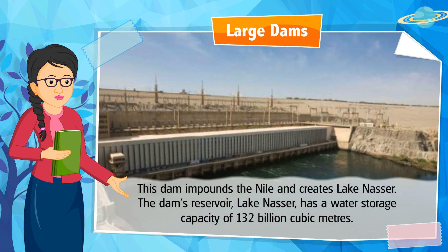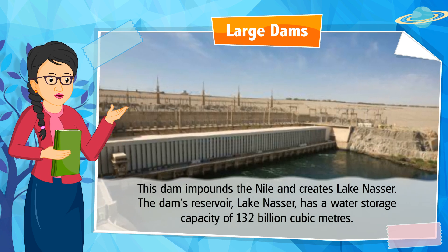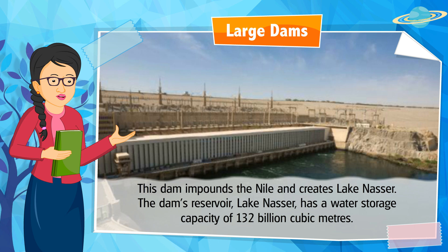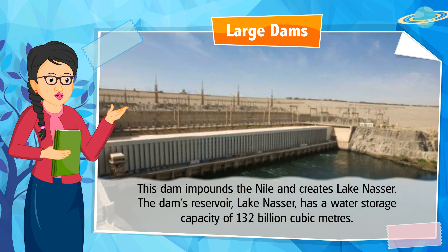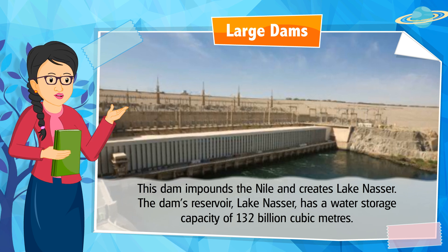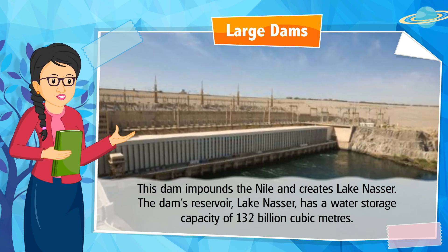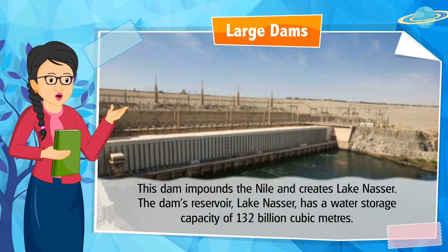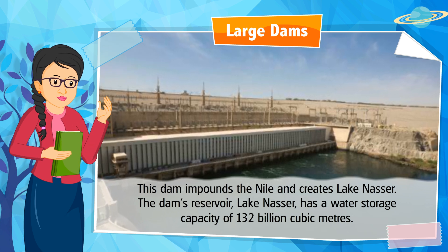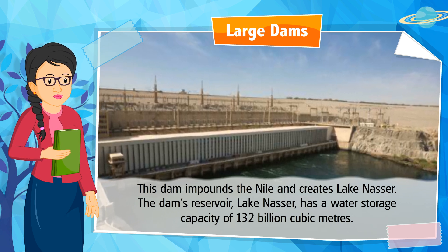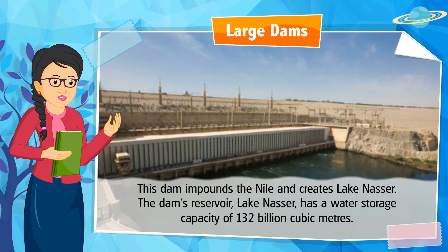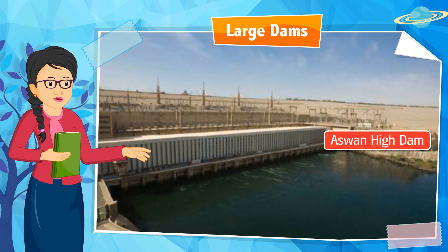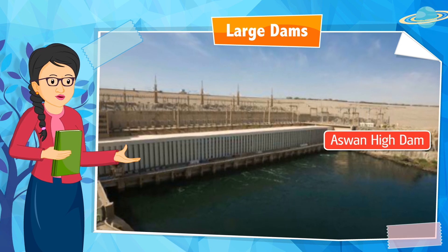This dam impounds the Nile and creates Lake Nasser. The dam's reservoir, Lake Nasser, has a water storage capacity of 132 billion cubic meters. Can you identify the name? It is Aswan High Dam.